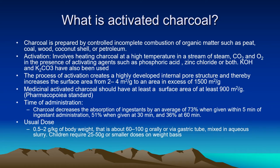Charcoal is prepared by controlled incomplete combustion of organic material such as peat, coal, wood, coconut shell, or petroleum. Activation — that is, producing activated charcoal — involves heating charcoal at high temperature in a stream of steam, carbon dioxide, and oxygen in the presence of activating agents. The activating agents are phosphoric acid, zinc chloride, or both; other agents include potassium hydroxide and potassium carbonate. This process creates a highly developed internal pore structure, increasing the surface area.